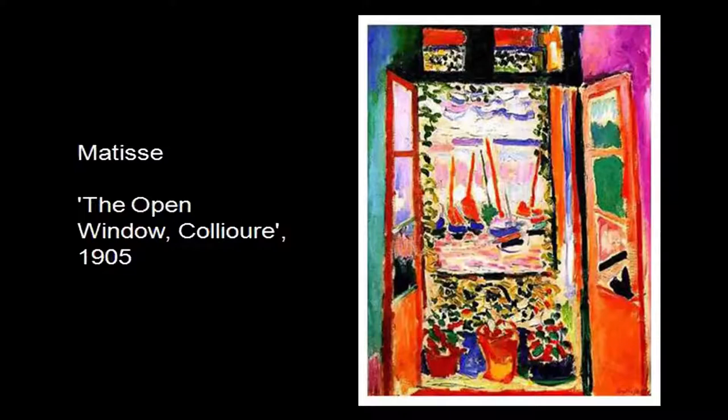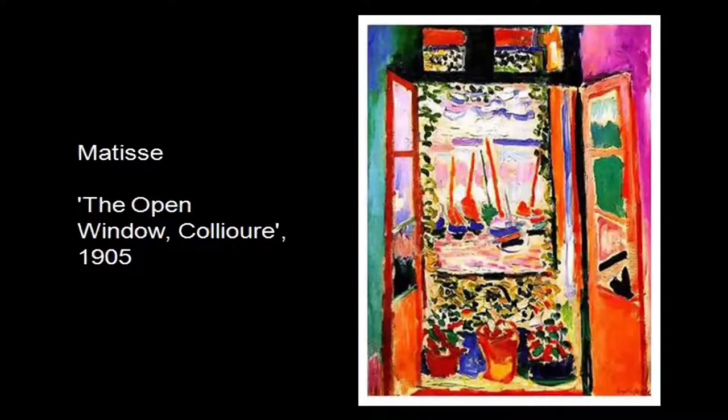Lines might be following or may be completely absent — it doesn't matter. Colours are playing the role of defining the form, giving an embodiment to the form. If you look at the painting called The Open Window by Matisse, you can see exactly what the Fauves were trying to do.